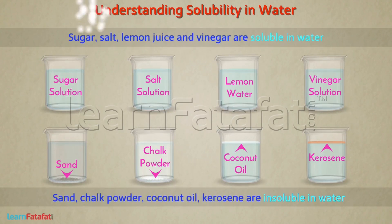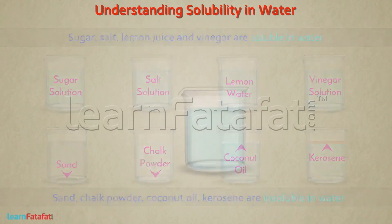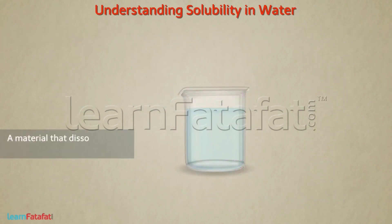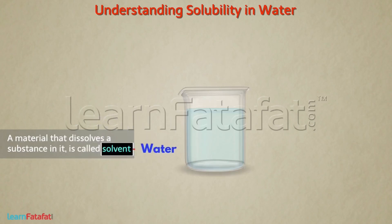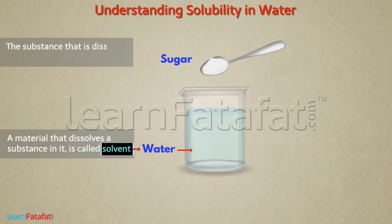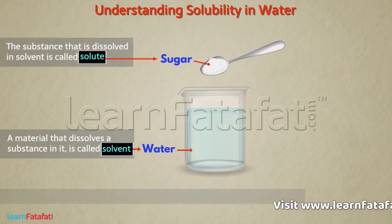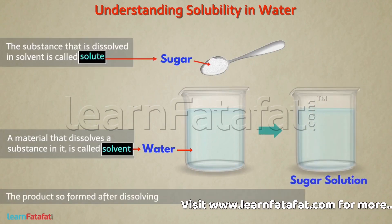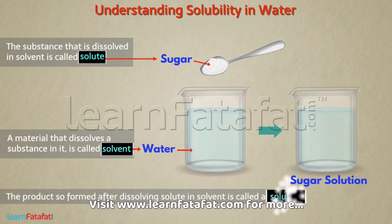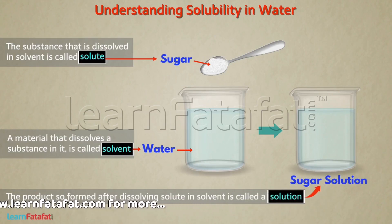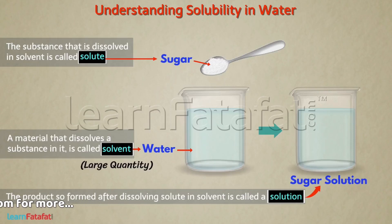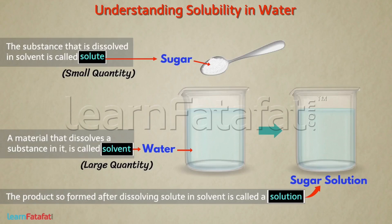In general, a material that dissolves a substance in it is called a solvent. The substance that is dissolved in a solvent is called a solute. The product formed after dissolving solute in solvent is called a solution. In a solution, usually the solvent is in large quantity and the solute is in smaller quantity.